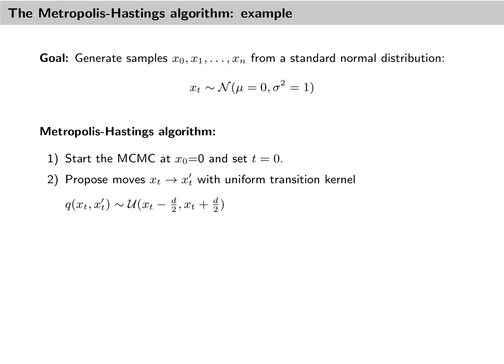In the second step, we are then going to propose moves from current values xt to potential new values xt'. And we are going to do so with a so-called uniform transition kernel. That is, we are going to say that the new value xt' is drawn from a uniform distribution centered on xt and with width d. Uniform transition kernels are often used. They have the benefit of cancelling out in the Hastings ratio, as we are going to see in a second.